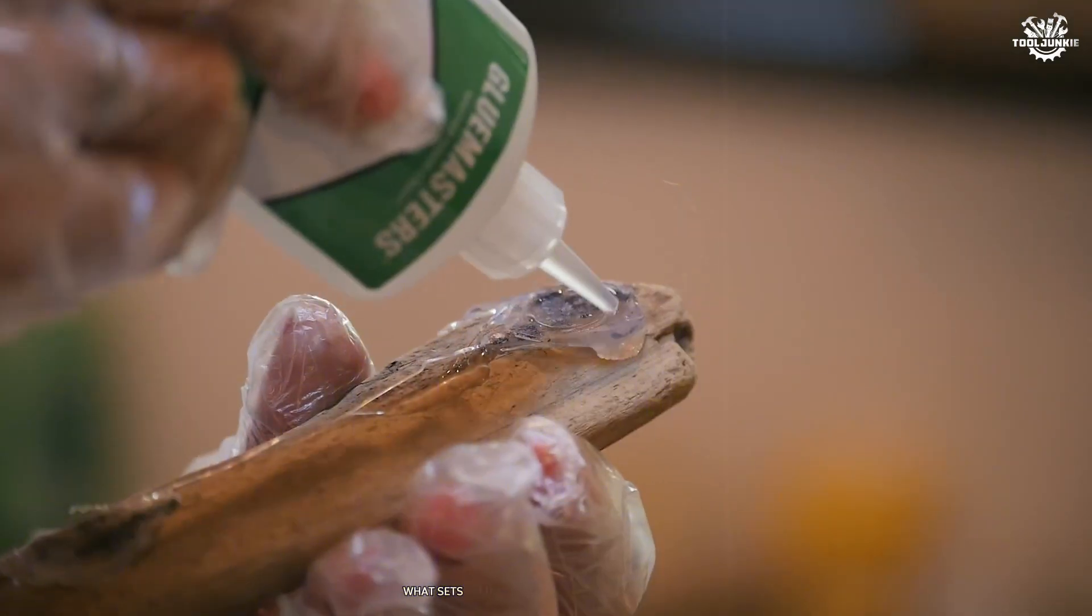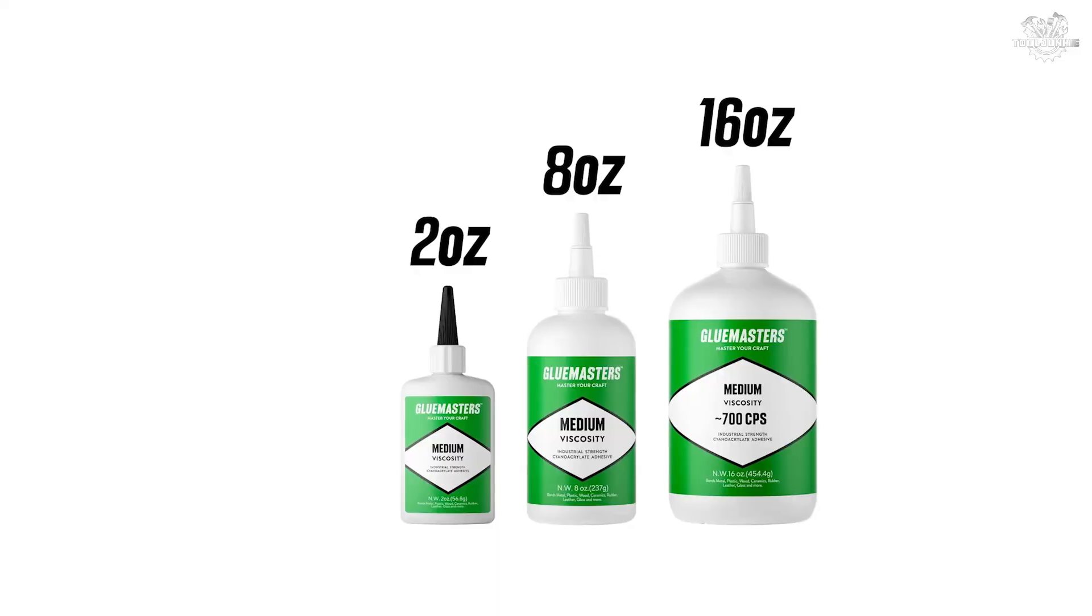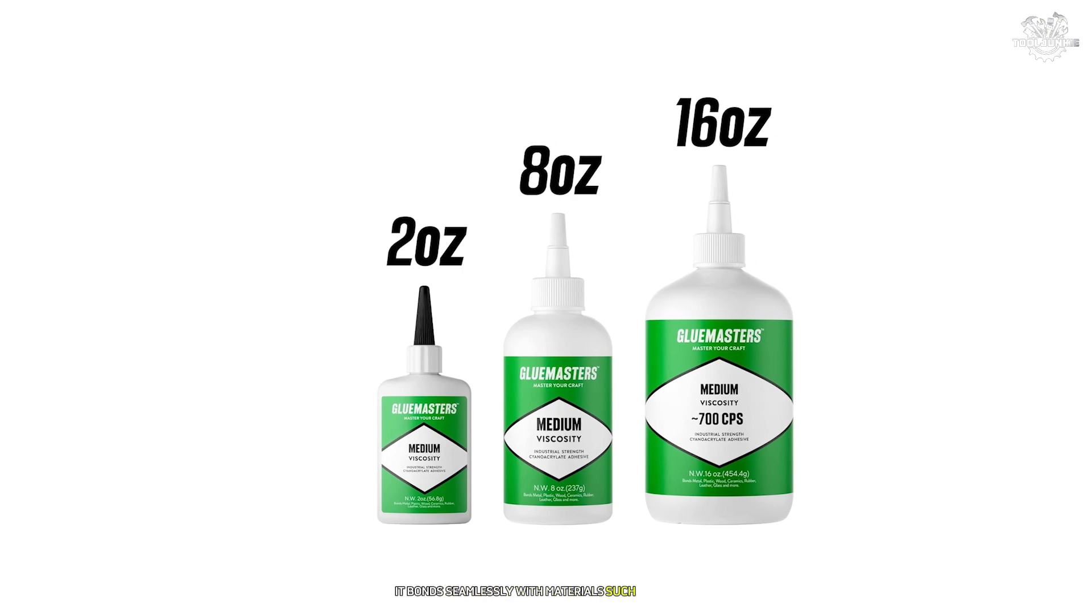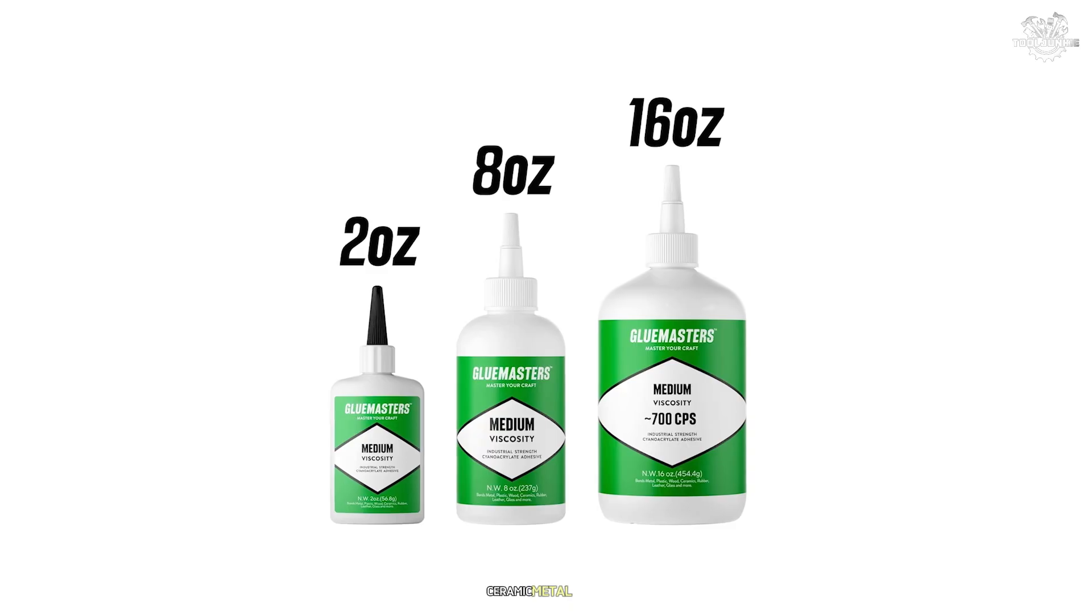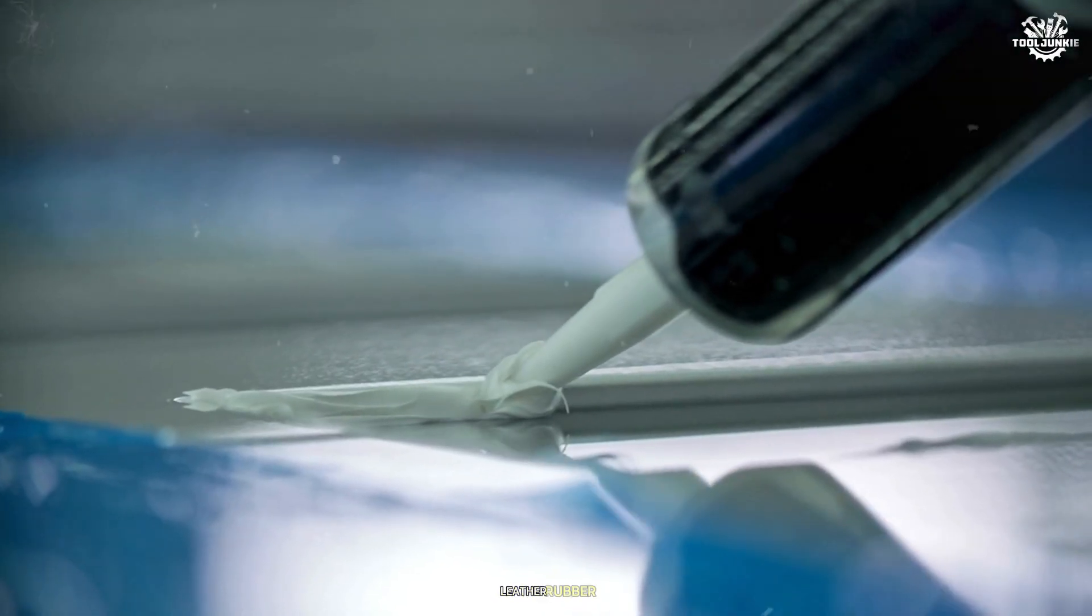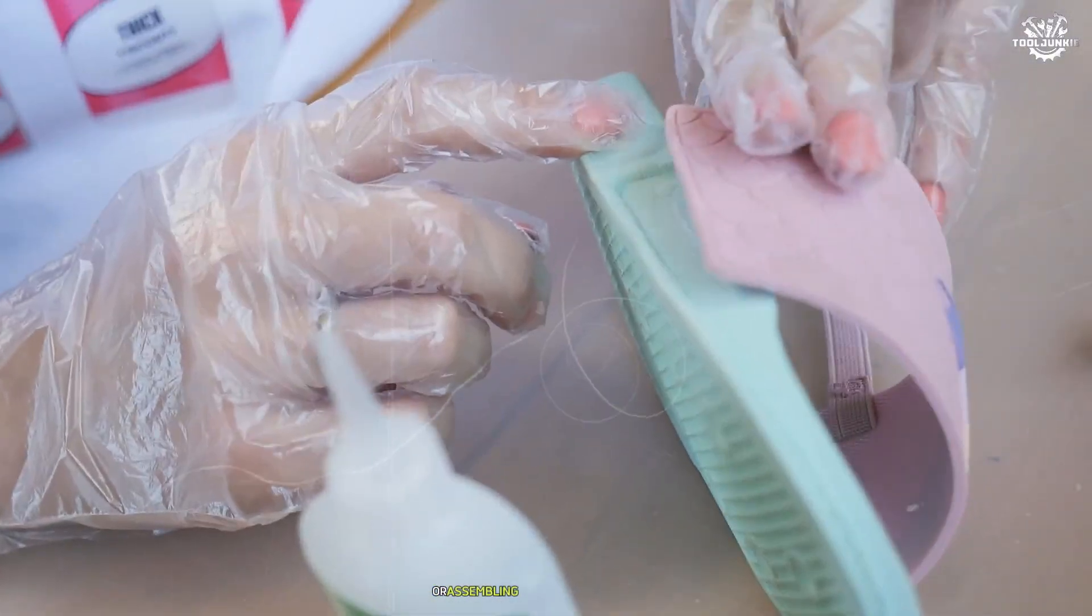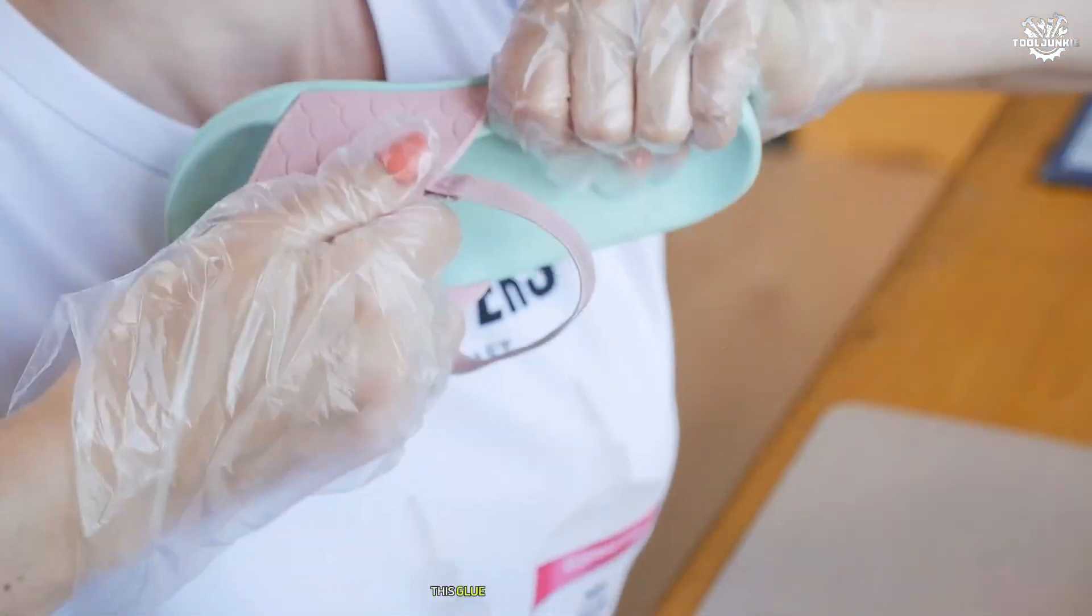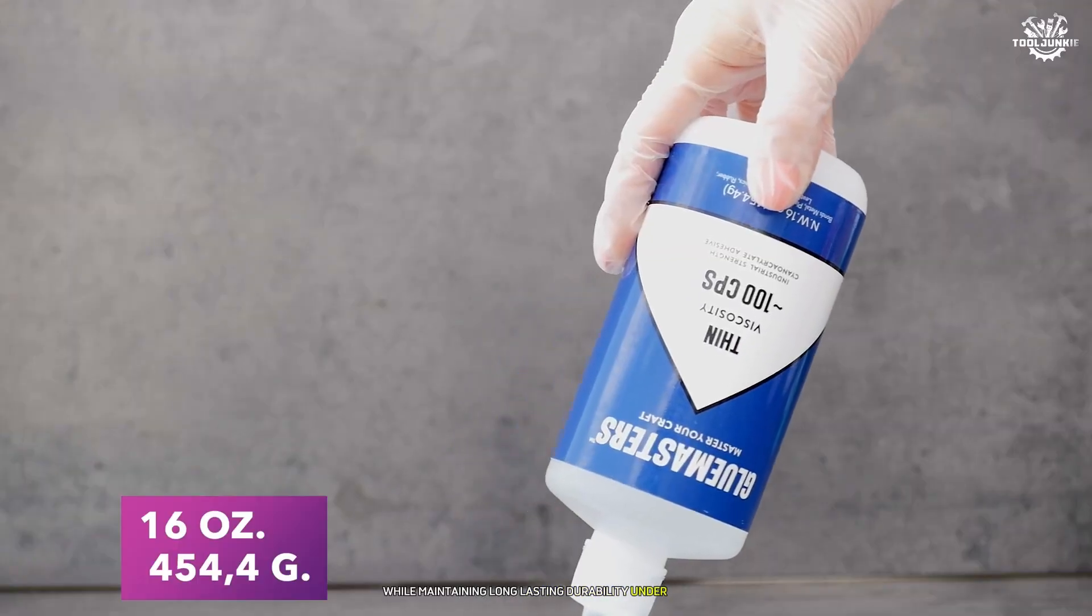What sets Glue Masters apart from competitors is its combination of strength and versatility. It bonds seamlessly with materials such as plastic, PLA included, wood, ceramic, metal, glass, leather, rubber, you name it. Whether you're repairing delicate parts or assembling heavy-duty components, this glue handles both tasks with ease while maintaining long-lasting durability under stress.